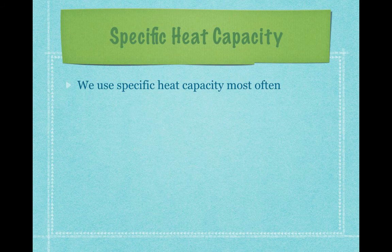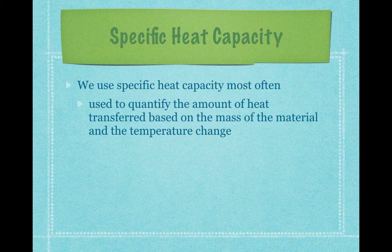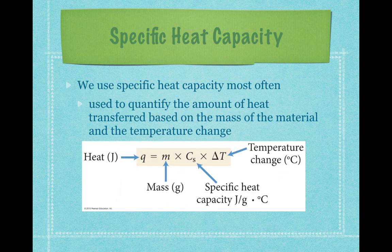Specific heat capacity is used to quantify the amount of heat transferred based on mass and temperature change. It's an intensive property, so the heat capacity doesn't change, but the amount of heat needed does change based on mass — it takes more heat to change the temperature of a large mass than a small one. The equation is: Q (heat in joules) equals mass (in grams) times specific heat capacity (in joules per gram per degree Celsius) times delta T, the temperature change.